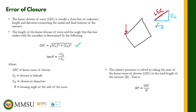To solve for theta — the bearing angle of the side of error — the tangent of theta equals the negative closure in departure over the negative closure in latitude. And if we want to solve for our relative precision, the relative precision is solved by taking the ratio of the linear error of closure to the total length of the traverse.